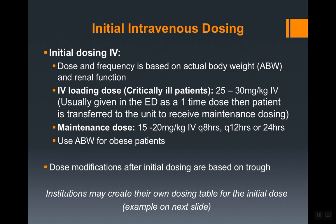For critically ill patients — such as those with endocarditis or meningitis — they usually receive an IV loading dose before starting the maintenance dose. This is done to rapidly increase vancomycin levels in the blood, after which the patient receives intermittent maintenance doses. This is usually done in the ED, where they give a one-time dose before sending the patient up to the unit.